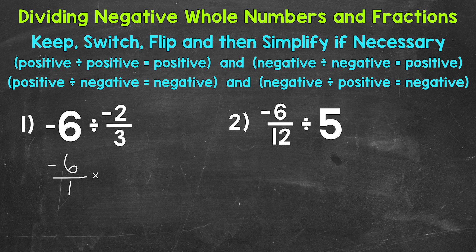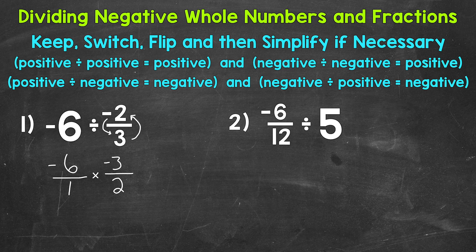Switch to multiplication and then flip our second fraction, so the denominator is going to become the numerator and the numerator is going to become the denominator. So we have three over negative two. I'm going to keep the negative sign with the numerator throughout this video. There are different ways to write out negative fractions — we can keep the negative sign with the numerator, put it in front of the fraction, or write it with the denominator. Now we're ready to multiply straight across, starting with our numerators, the top numbers.